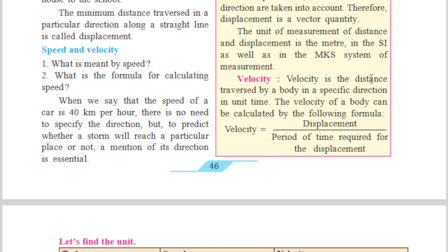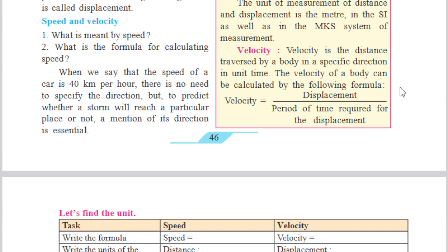Velocity is the distance traversed by a body in a specific direction in unit time. Velocity can be calculated by the formula: velocity is equal to displacement divided by the period of time required for the displacement. When we say that the speed of a car is 40 km per hour, there is no need to specify the direction. But to predict whether a storm will reach a particular place or not, a mention of its direction is essential.